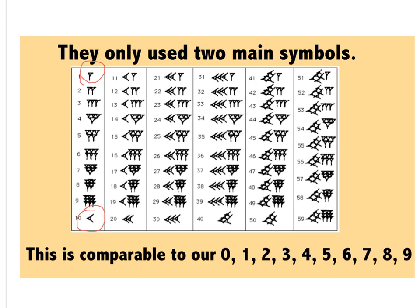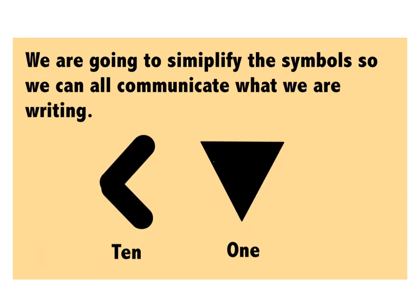Go ahead and pause the video if you need to to finish filling that in on your guided notes. To simplify the symbols so it's a little bit faster and easier to write and clearer, when we indicate a 10 value, we're going to use this sideways arrow kind of Pac-Man less than symbol style. And then for a 1 value, we are going to use a downward facing triangle as you see here.